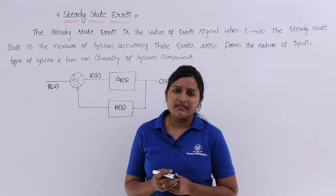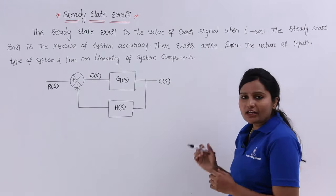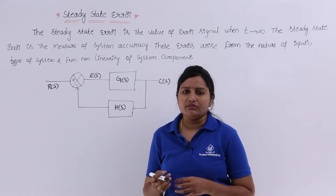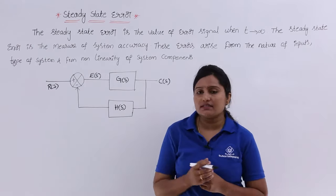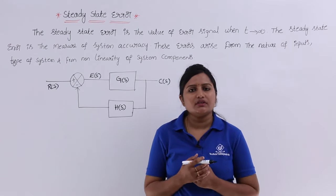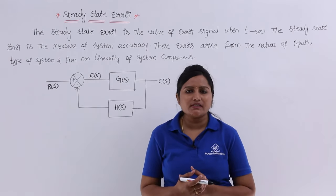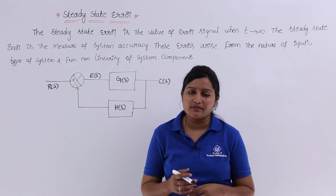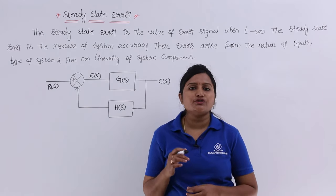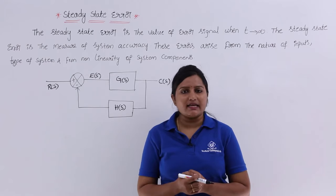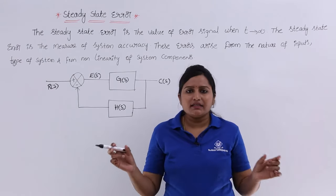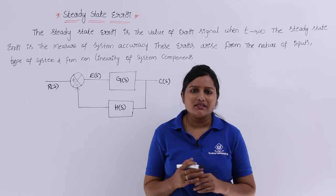Steady-state error is nothing but the value of the error signal when T tends to infinity. It measures the accuracy of the system. This steady-state error arises due to the nature of the input, type of system, or non-linearities of the system components. Generally, if your actual output is not matching with your input, then the difference between those two is called the error signal.